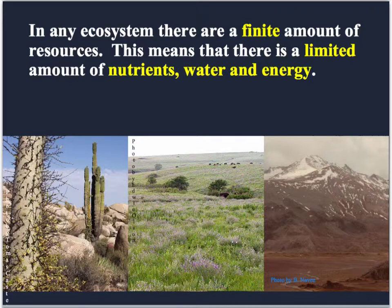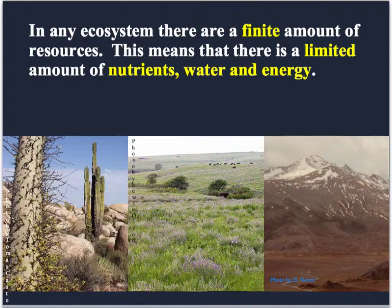All animals live in what's called an ecosystem. Your ecosystem is going to be everything around you — all the other animals that live where you live, all the plants, how much water you get, whether you live in a desert or a rainforest. One thing that all ecosystems have in common is that they all have a certain amount of resources. We're going to use the word 'finite' to describe those resources — finite just means limited. The things that are finite in an ecosystem are nutrients, water, and energy.